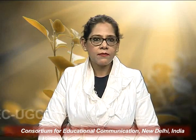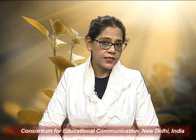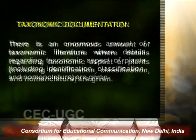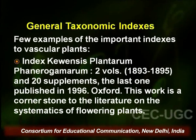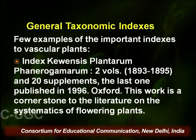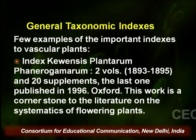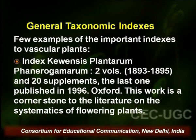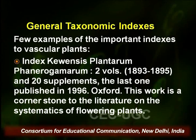There is an enormous amount of taxonomic literature that exists where details of any species, or regarding taxonomic aspects of plants, are given — including identification, classification, nomenclature, etc. One important example of a plant index to vascular plants is Index Kewensis, also known as Index Filicum or Index Phanerogamarum. As I already discussed, Index Kewensis was published by the Royal Botanic Garden at Kew. There are two volumes and 20 supplements of it, and the last one was published in 1996. This work is a cornerstone of the literature on the systematics of flowering plants.